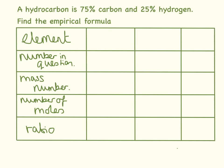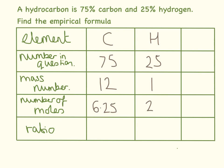In this question we have 75% carbon and 25% hydrogen. The mass number of carbon is 12, and the mass number of hydrogen is 1. 75 divided by 12 equals 6.25, and 25 divided by 1 equals 25. We divide by the smallest number, which is 6.25. So 6.25 divided by 6.25 is 1, and 25 divided by 6.25 equals 4. Our answer is CH4.